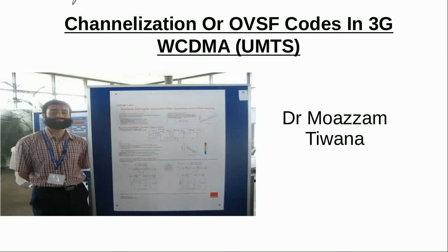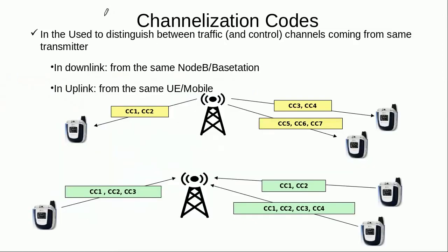Bismillahirrahmanirrahim. This is Dr. Muzzam Tewana and today's lecture is about channelization or OVSF codes, which are used in 3G WCDMA, also known as 3G UMTS. First of all, what is the purpose of channelization codes? Basically, the purpose of channelization codes is to distinguish between the channels that are coming from the same transmitter.